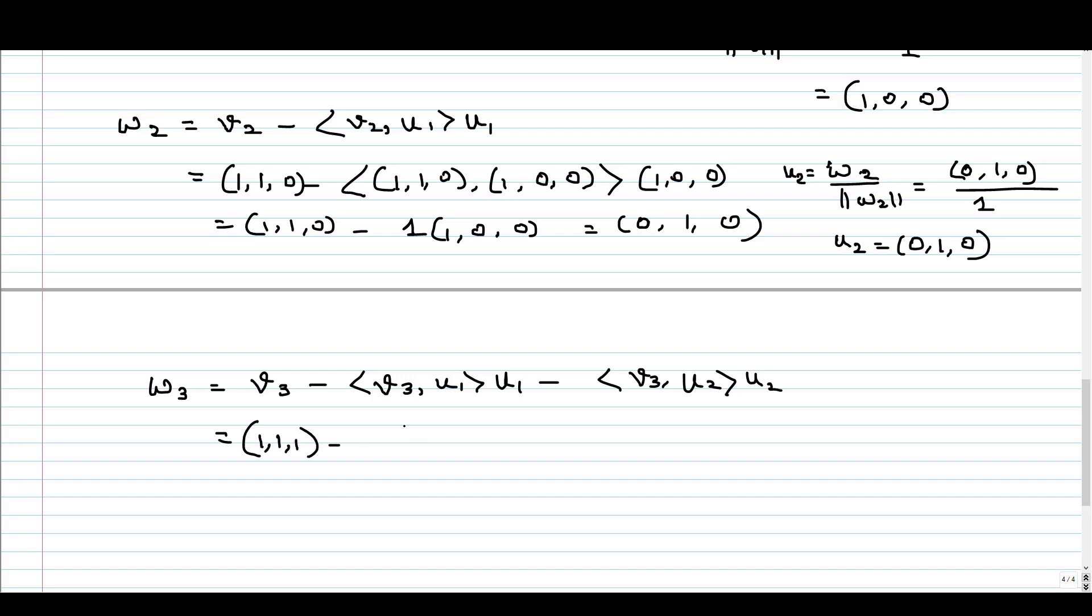So our V3 was (1, 1, 1), and if we take this inner product, this is (1, 1, 1) and our U1 is (1, 0, 0). I write down the U1 here. And now again, our V3 is (1, 1, 1). Our U2 is the vector we got, that is (0, 1, 0). So I'm writing that down (0, 1, 0).